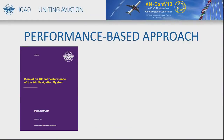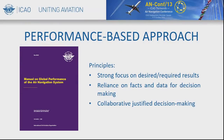With the performance-based decision-making method, ICAO is not inventing something new. This method is described in ICAO document 9883, the manual on global performance of the air navigation system. However, it is not easy to understand on first reading, so we have simplified it into six steps. The principles of this method are: a strong focus on desired and required results; reliance on facts and data for decision-making; and collaboration among all stakeholders in justified decision-making based on data and facts.